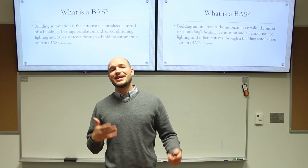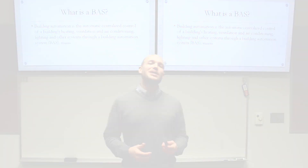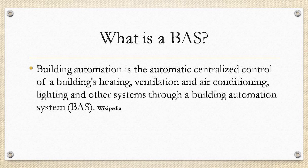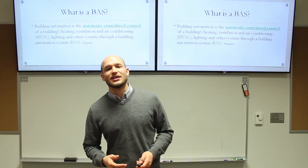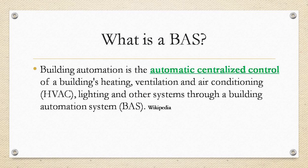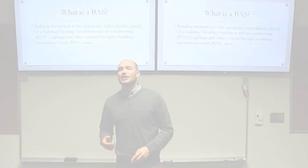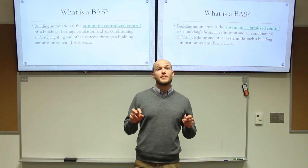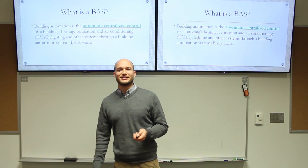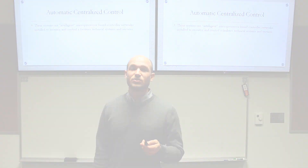What is a BAS? Building automation is the automatic centralized control of a building's heating, ventilation, and air conditioning, lighting, and other systems through a building automation system — that's from Wikipedia. The keywords I want to focus on are: automatic, centralized, and control. We're going to get into control systems in a bit, but first let's discuss the automatic centralized piece.